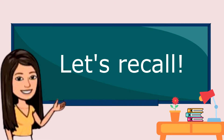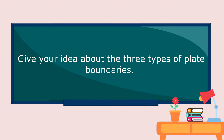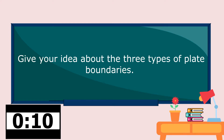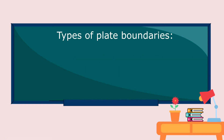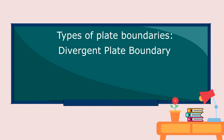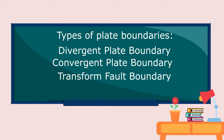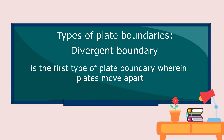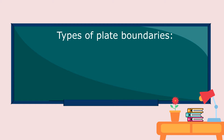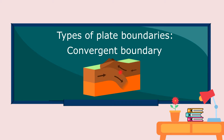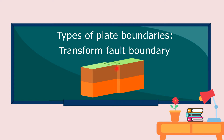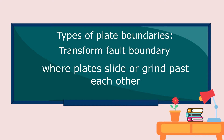But before that, let us recall the three types of plate boundaries. The three types of plate boundaries are divergent, convergent, and transform fault boundary. Divergent plate boundary is the first type wherein plates move apart. The second type, convergent plate boundary, is where plates collide. The third type is the transform fault boundary where plates slide or grind past each other.